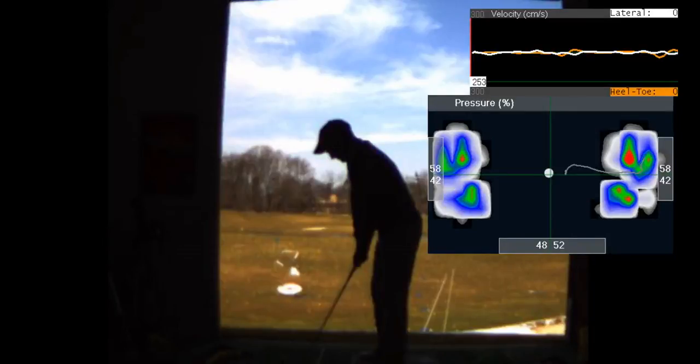Your shoulders are very closed, Mike, when you set up to the ball, which is a bit of a concern. Your shoulders are aiming a good 20 yards to the left, which brings your club from in to out too much. So all I want to do is square your shoulders up.